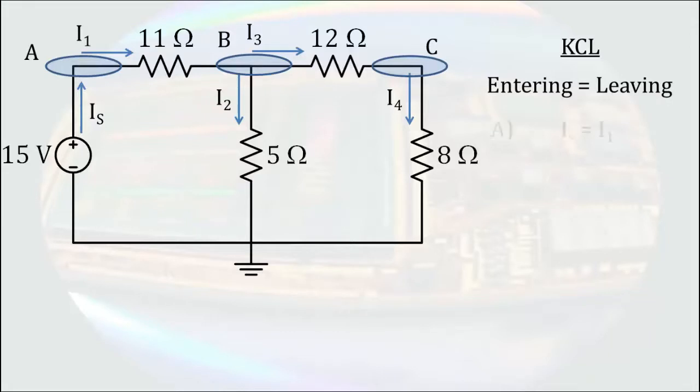So, at node A, IS enters and I1 leaves. At node B, I1 enters and I2 and I3 leave. At node C, I3 enters and I4 leaves.